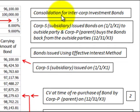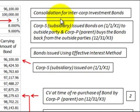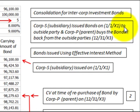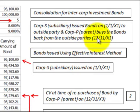Here we're going to be looking at the consolidation for inter-corporation investment in bonds, using the effective interest rate method. For our example, Corporation S, the subsidiary, issues bonds on 1/1/X1 to the outside party. And Corporation P, the parent, buys back the bonds from these outside parties on 12/31/X3, three years later.